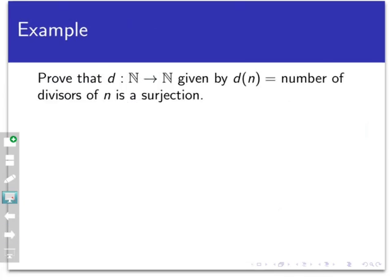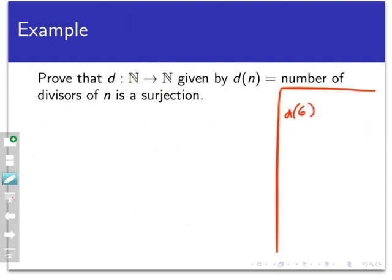Here is a third example from an in-class activity in Math 210. We define d from the natural numbers to the natural numbers, where d(n) is the number of divisors of n, and we want to prove this is a surjection. To see how it works: d(6) = 4, since 6 is divisible by 1, 2, 3, and 6. We let k be an arbitrary natural number. The natural numbers don't have much structure beyond being positive integers, so we just leave k alone for now.